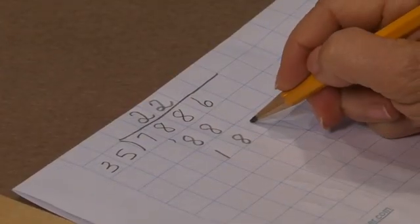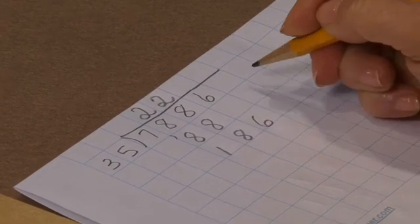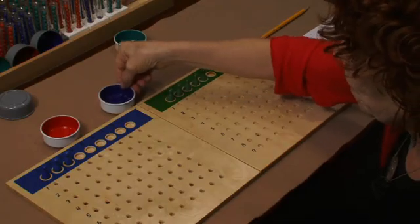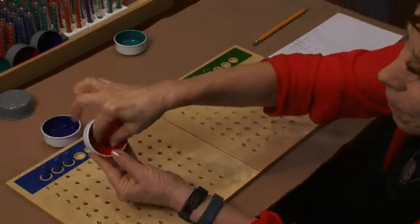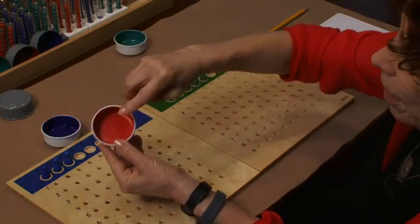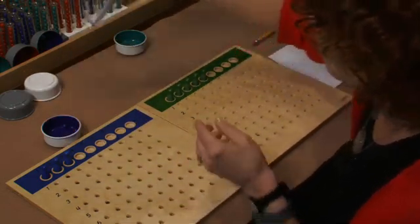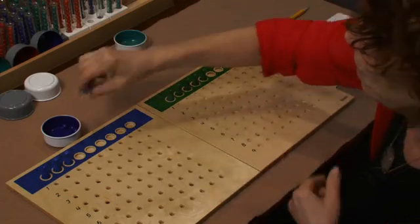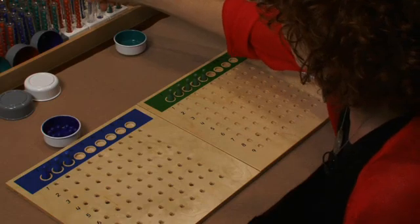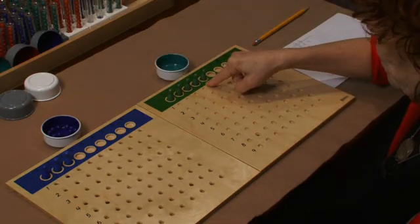I'm bringing down the six, so that I'll be distributing tens and units. I'm going to give tens to the tens place, and take care of this one hundred, which I can't share, by exchanging it for tens.